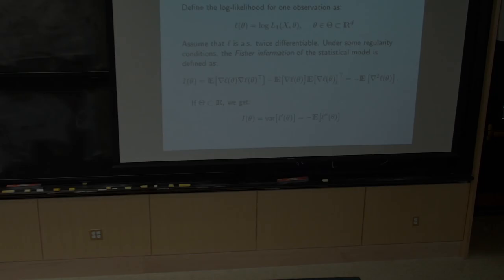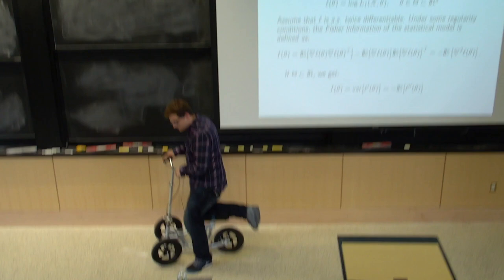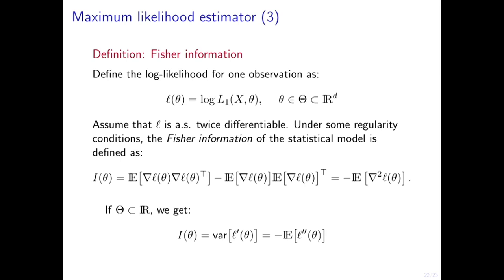Welcome back. We're going to finish this chapter on maximum likelihood estimation. Last time, I briefly mentioned something called Fisher information. Fisher information, in general, is actually a matrix when you have a multivariate parameter theta. So if theta is of dimension d, then the Fisher information matrix is going to be a d by d matrix.